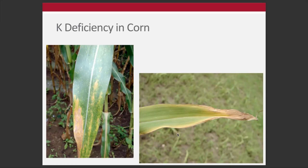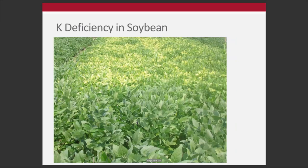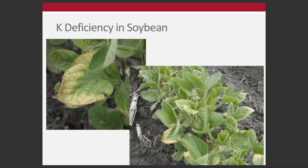Other examples of potassium deficiency in corn can look more like lesions, almost resembling disease, but it's potassium deficiency — environment and hybrid specific. In soybeans, which are very sensitive to potassium deficiency, you see patches in fields, not just on lower leaves. This kind of swath pattern is very classic potassium deficiency, and you'll see it from time to time in Ohio fields — it's not particularly uncommon.